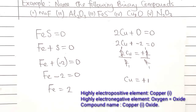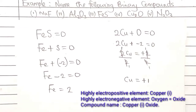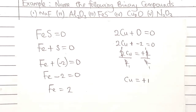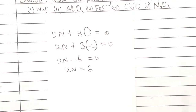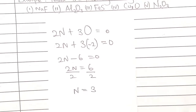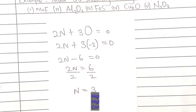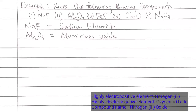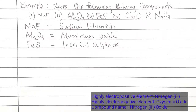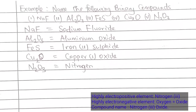For N2O3: oxygen is more electronegative and is taken as minus 2. We have two nitrogen atoms adding to three oxygen atoms, and their charges must sum to zero. Three times minus 2 gives minus 6. Making N the subject: 2N = +6, so N = +3. Therefore, we name this nitrogen(III) oxide. Our final answers are: sodium fluoride, aluminum oxide, iron(II) sulfide, copper(I) oxide, and nitrogen(III) oxide.